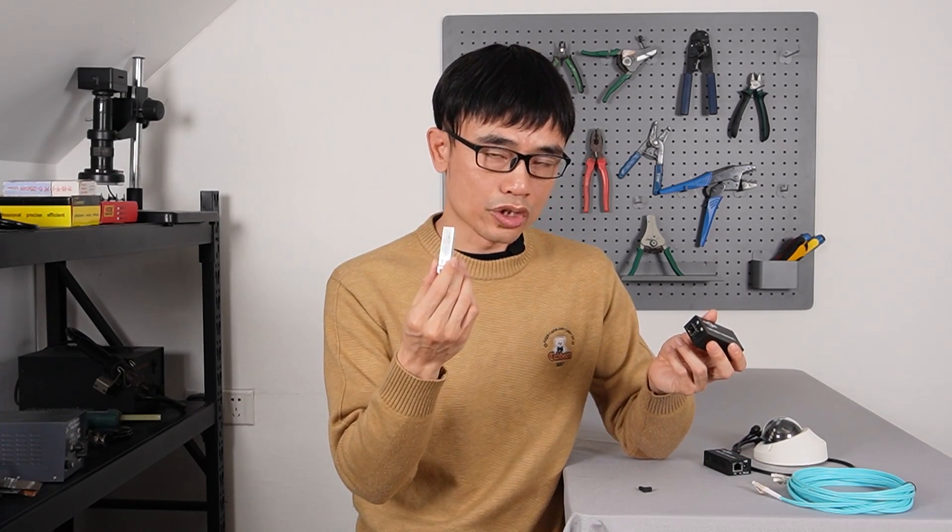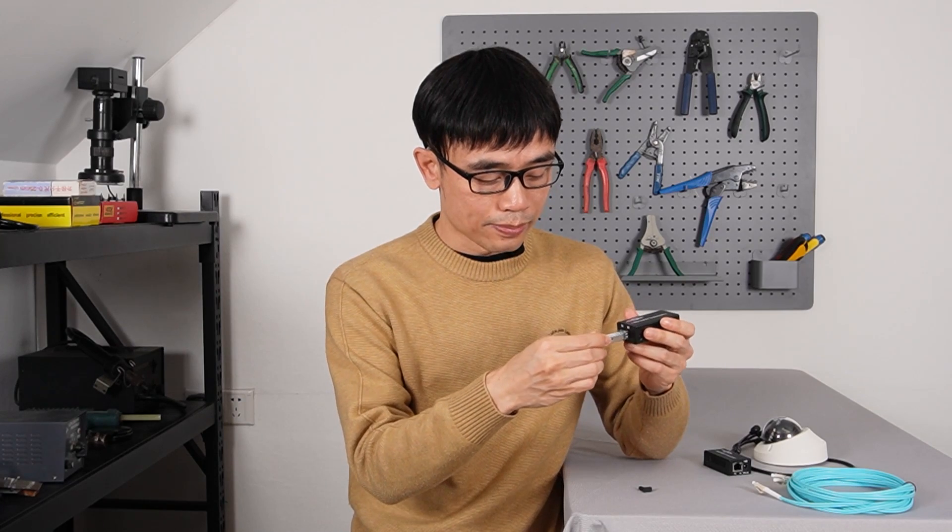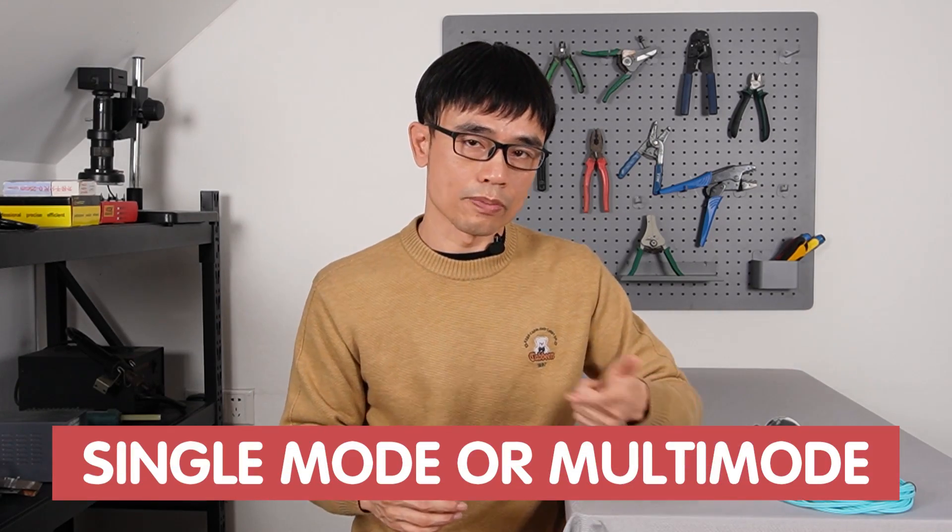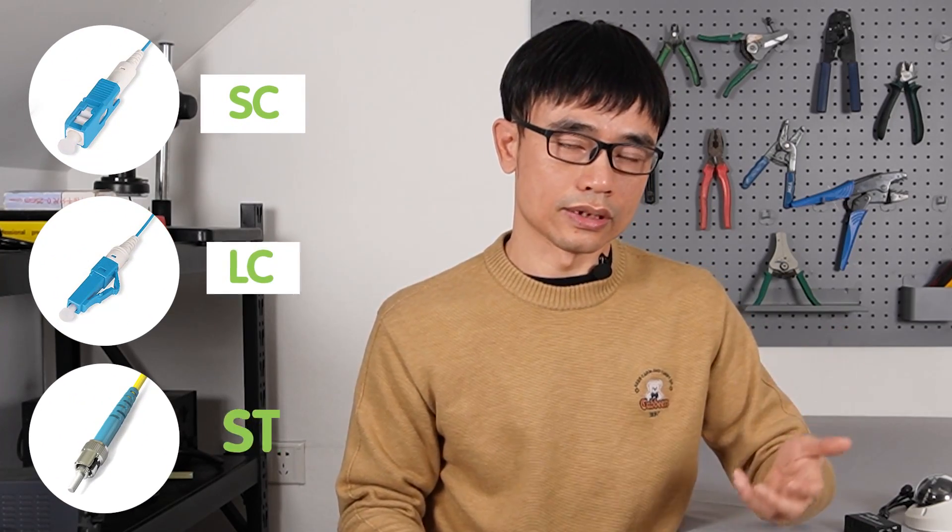There's one critical component for the media converter called the SFP transceiver. The SFP transceiver is sometimes sold separately because it determines what kind of fiber optic cable you can use - single mode or multimode, what kind of connector you can use - either SC, LC, or ST.